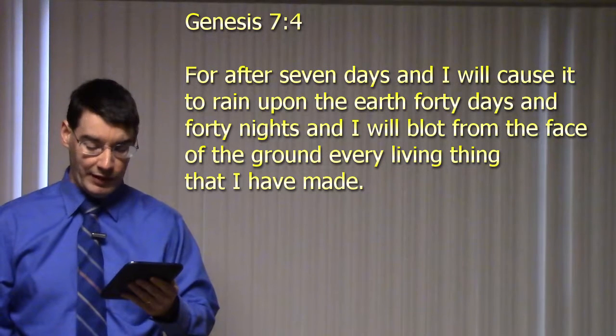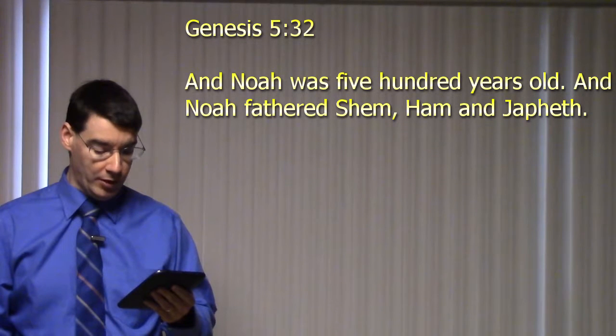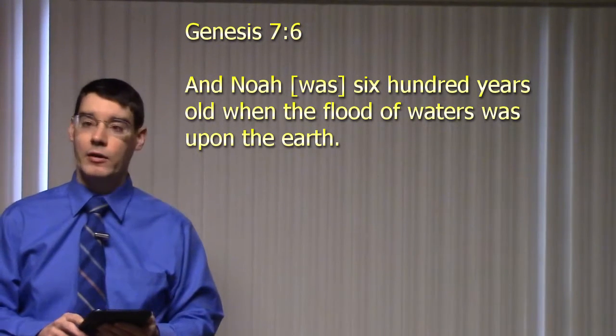Now, if you look in the Genesis text, there is a mention of seven days at one point. It's at Genesis chapter 7 verse 4: 'For after seven days, I will cause it to rain upon the earth forty days and forty nights, and I will blot from the face of the ground every living thing that I have made.' But this is speaking of the number of days right before the flood comes. Is there any place in Genesis where we can get a time indicator of the possible amount of time Noah had to build his vessel? Well yes, we do have that information. Genesis chapter 5 verse 32 says, 'And Noah was five hundred years old, and Noah fathered Shem, Ham, and Japheth.' In chapter 7 verse 6, we see the age of Noah right before the flood: 'And Noah was six hundred years old when the flood of waters was upon the earth.'